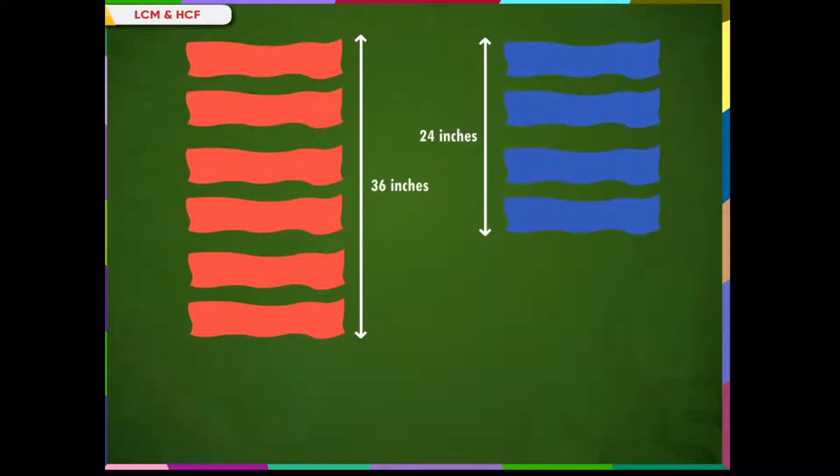The Highest Common Factor of 36 and 24 is 12. So, we can say that Priya should cut each piece to be 12 inches wide.